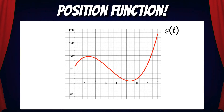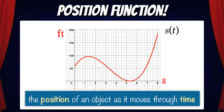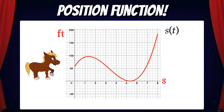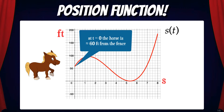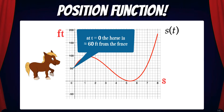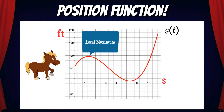Here we have a graph of a position function called s. Note that the units on the y-axis are feet, and the units on the x-axis are seconds. This is a graph of a position function, so it's illustrating the position of a certain object as it moves through time. Let's just say for fun that this function represents the position of a horse from a fence. At t equals 0, the horse is approximately 60 feet from the fence. Between t equals 1 and 2, the horse reaches its farthest current distance from the fence. This corresponds to a local maximum on the function.